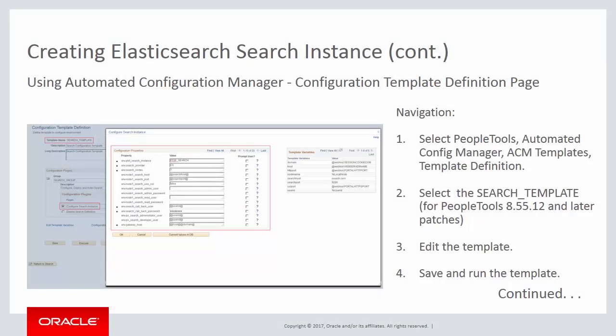The delivered search_template consists of two plugins: Configure Search Instance, where you specify the configuration properties for a search instance, and Deploy Search Definition, where you specify the deploying and indexing of search definitions and categories. The properties of the plugins are discussed in the demonstration.